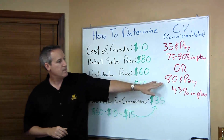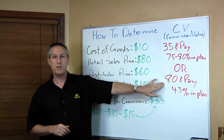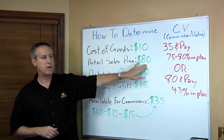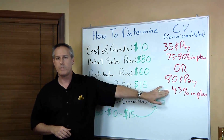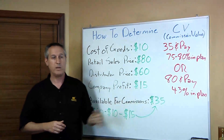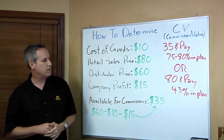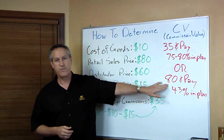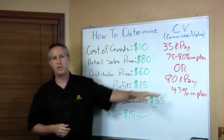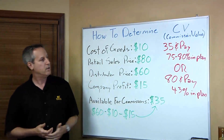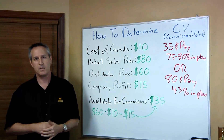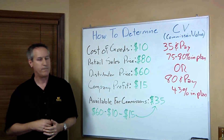The other option is to set your CV at $80, which is your retail sales price, and then pay out about 43%. How do we get 43%? Our available commission is $35, and $35 is 43% of $80. So those are two schools of thought on how you can structure the compensation plan and pay out commissions.